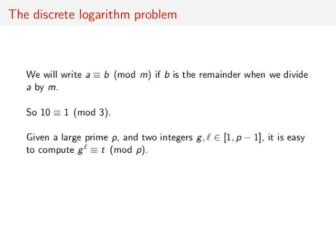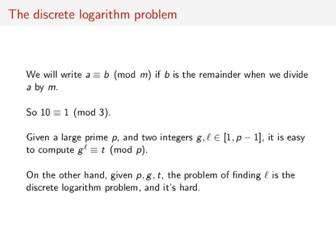Now, if we start with a large prime p and two integers g and l that are between 1 and p minus 1, we'll see in a moment it's really easy to compute g to the l is congruent to t modulo p. On the other hand, if I give you just p, g, and t, the problem of finding l is the discrete logarithm problem, and it's darn hard.